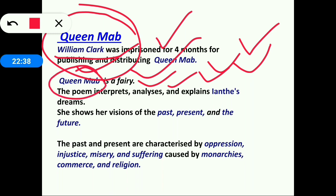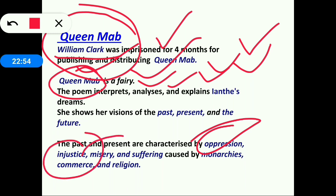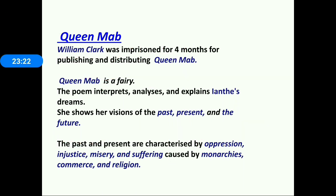Queen Mab is a fairy — the main protagonist of the poetry. Queen Mab wants to make human beings aware of what will be the future if they continue oppressing people, committing injustice, and keeping people in misery and sufferings. The poem thus stands against the folly of oppression, injustice, misery, and sufferings, calling for better change.